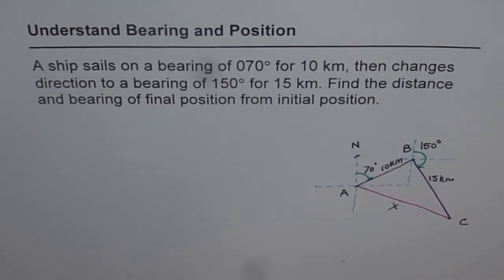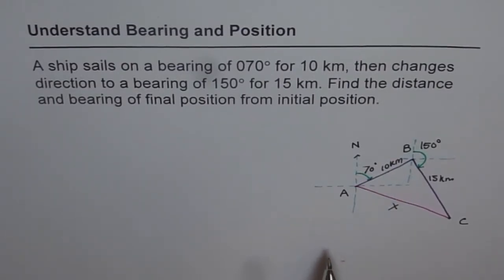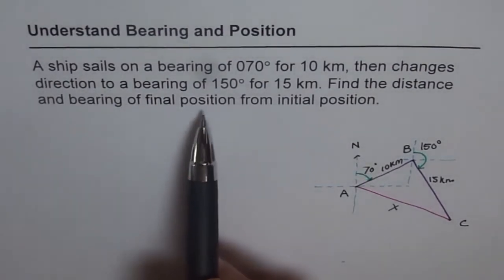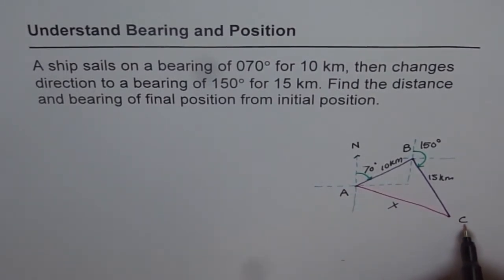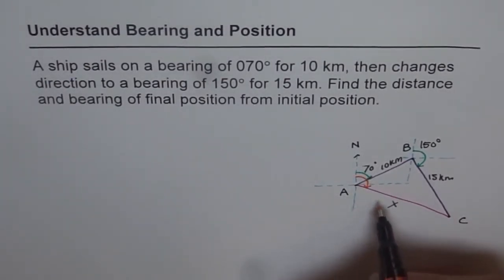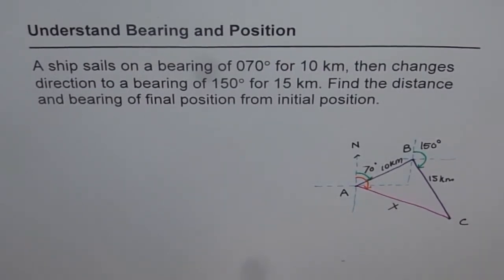Now to solve this triangle, we know two sides. So if we get this included angle, then we can use cosine law and find X. So that is the first thing which we need to find. And the second thing is, we need to find bearing of final position from initial also. So bearing of final position from initial means from A, how is C located? So from north, if you see, that is the bearing. So this angle also we need to find. That means 70 plus how much will give us bearing from A to C. So these are the two things which we need to find.